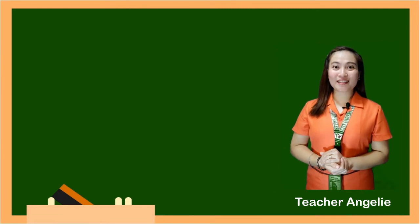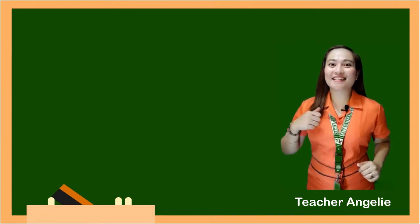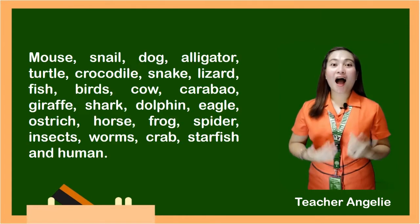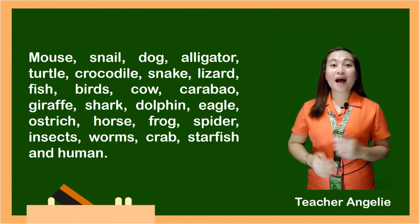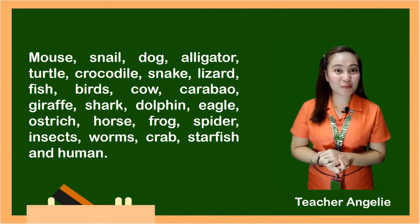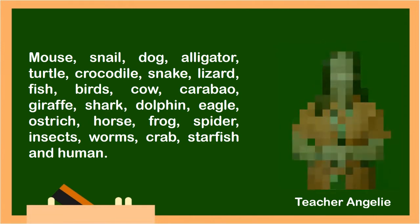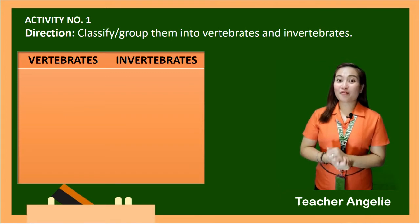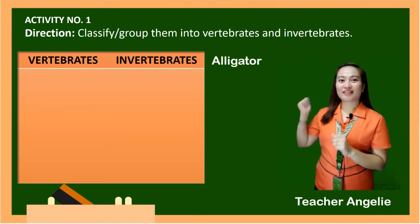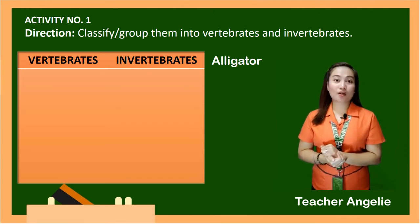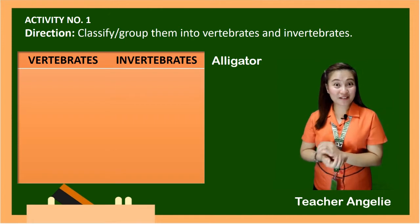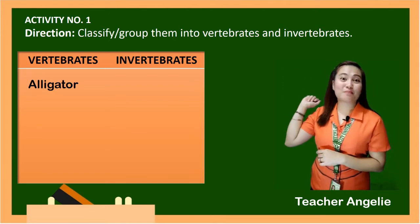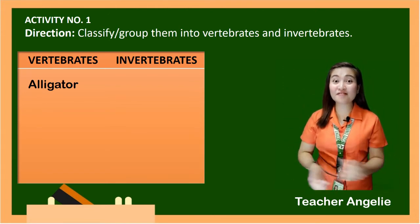Now that you already know what vertebrates and invertebrates are, let's have an activity. Did you still remember the animals shown in the video? I will pick 10 of them and we're going to classify them into vertebrates and invertebrates. First, we have the alligator. Does it belong to vertebrates or invertebrates? The alligator belongs to vertebrates because the alligator has a backbone.